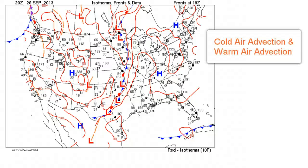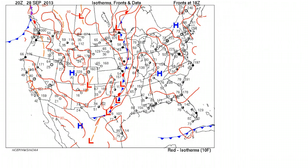Cold air advection and warm air advection. Cold air advection is when surface winds blow across isotherms from low values to high values, or from colder temperatures to warmer temperatures. Warm air advection would be the opposite — winds blowing across an isotherm from higher values to lower values, so from warm to cold.